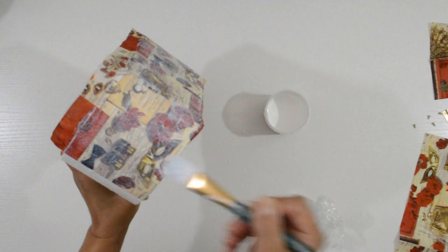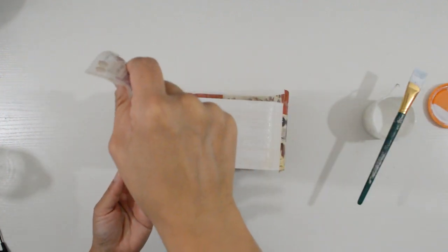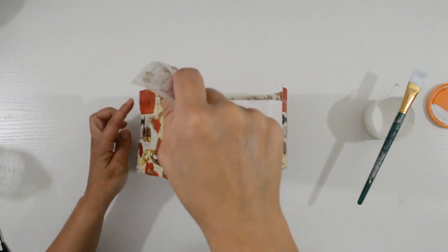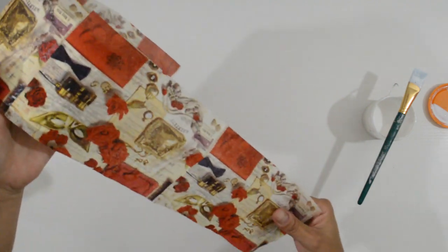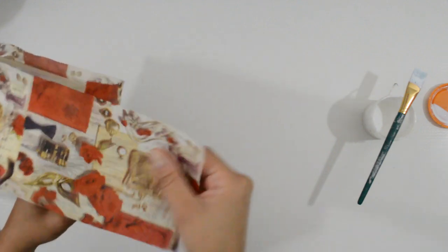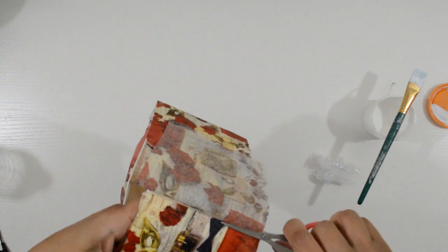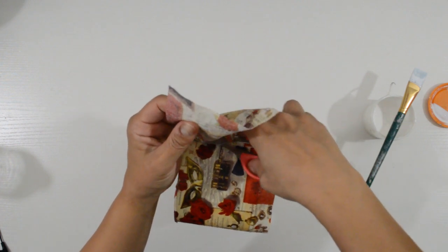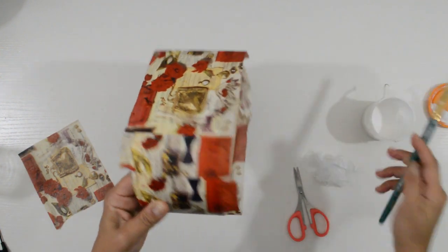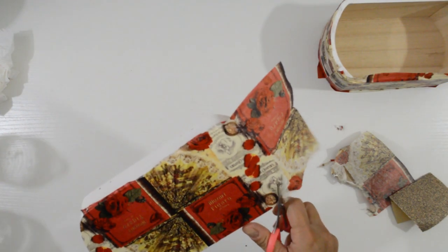Try not to get glue on the rim of the box. Once it's dry, you remove the excess.